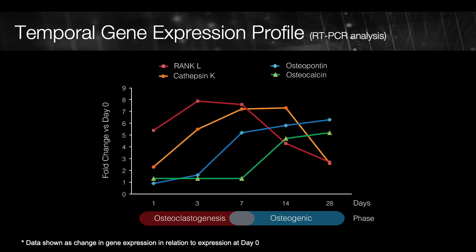Those markers appear very early in orthodontic tooth movement. On the other hand, the markers of bone formation — in these examples we are using osteocalcin and osteopontin — they appear later during orthodontic tooth movement.